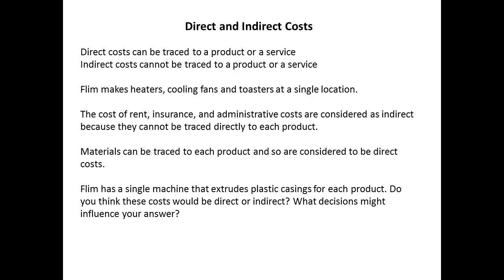If a machine is used to make casings, then the cost of use of the machine, including depreciation, could be considered a direct cost only if the usage can be traced for each product.